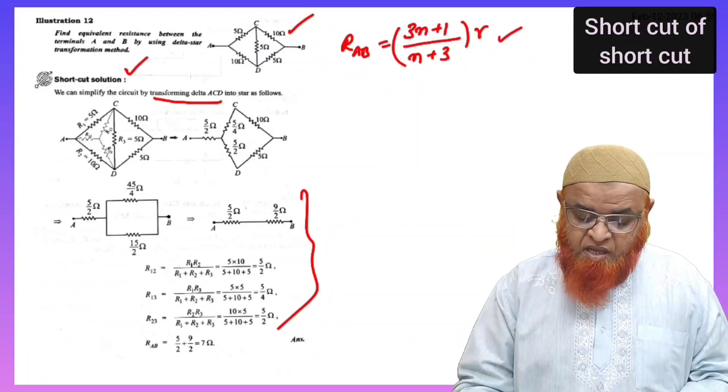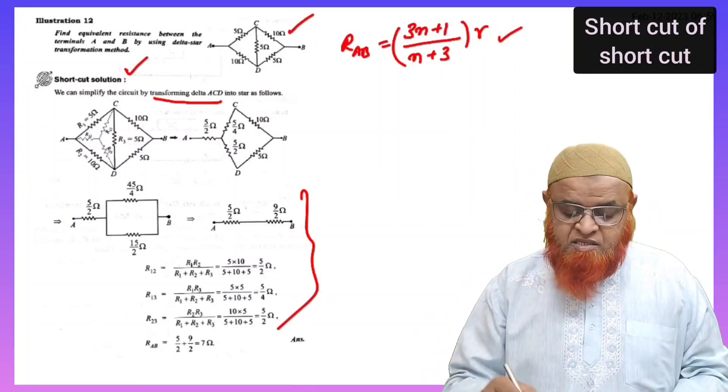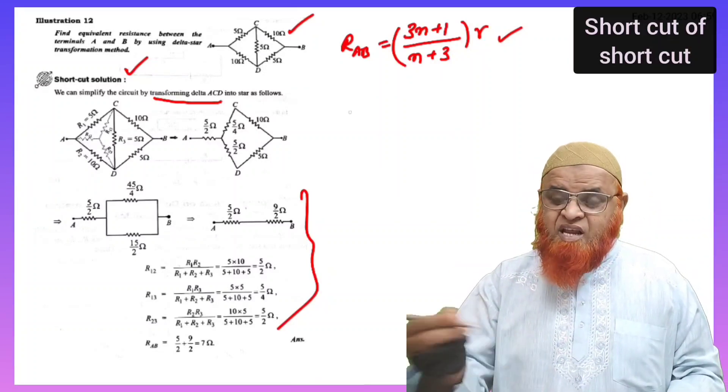So, I am giving a shortcut formula here. That is RAB equals (3N+1)/(N+3) times R.